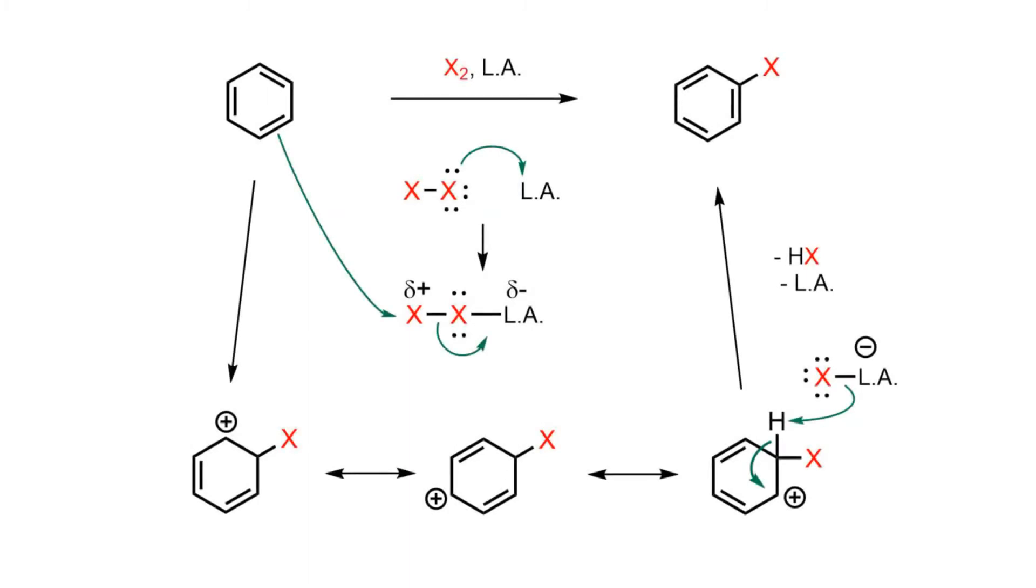The more electrophilic halogen is then attacked by the nucleophilic benzene ring in the rate-determining step. This produces a resonance-stabilized carbocation, which is subsequently deprotonated to give the halobenzene product as well as the reformed Lewis acid catalyst.